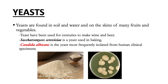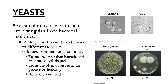Candida albicans is the yeast most frequently isolated from human clinical specimens. In the laboratory, yeast produce colonies similar in appearance to bacterial colonies. To distinguish a yeast colony from a bacterial colony, use a wet mount where a small portion of the colony is mixed with a drop of water or saline on a microscope slide. The preparation can also be stained using the Gram staining procedure. Yeast are usually larger than bacteria and are oval-shaped; some may be observed in the process of budding, whereas bacteria do not produce buds.